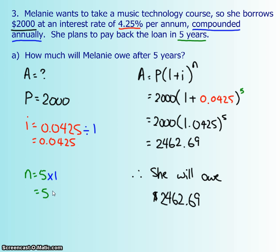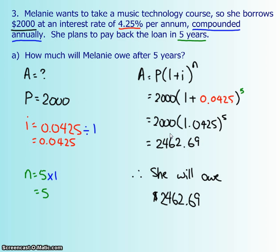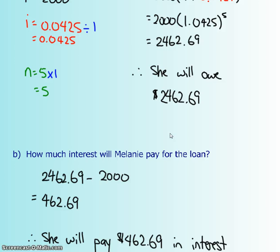Now input everything into the equation: A = P(1 + i)^n. Calculate the brackets first, then the exponent, then multiply. The final amount is $2,462.69. To find the interest she pays, subtract the original principal from the final amount: $2,462.69 minus $2,000 equals $462.69 in interest.